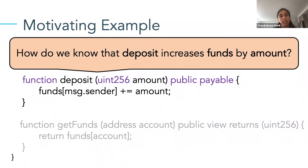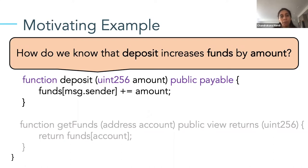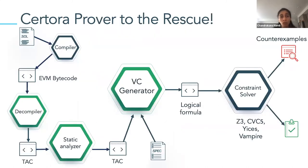Once you've written this contract, you might want to check whether the functions are actually doing what you expected. One property you might be interested in is whether deposit increases the fund of the sender by amount. You could look very carefully at the code and convince yourself it's correct. But the way the Certora Prover does it is more automated. How does it take code and specification and automatically tell you whether the code matches the spec?